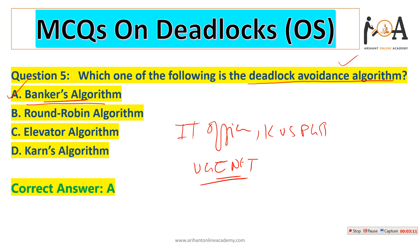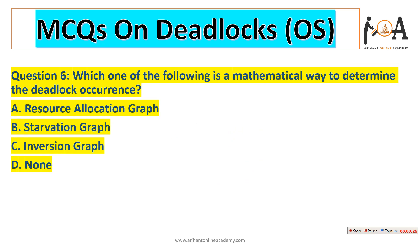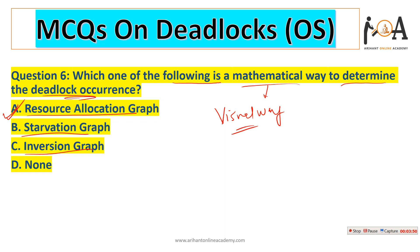Make note of it. If you want to prepare a short lecture on Banker's algorithm, please comment and we can make a lecture on your request. The next question is: which one of the following is a mathematical way to determine deadlock occurrence — resource allocation graph, starvation graph, inversion graph, or none? The resource allocation graph is a mathematical or visual way to determine whether a deadlock is occurring, so resource allocation graph is the correct answer.